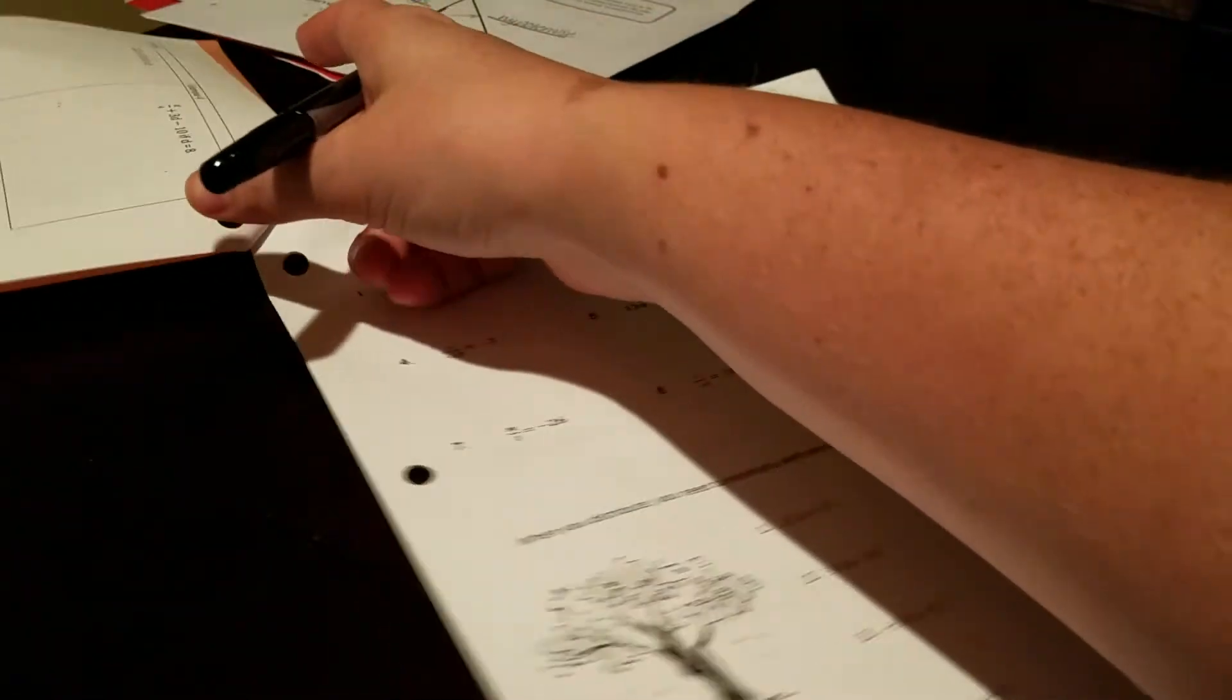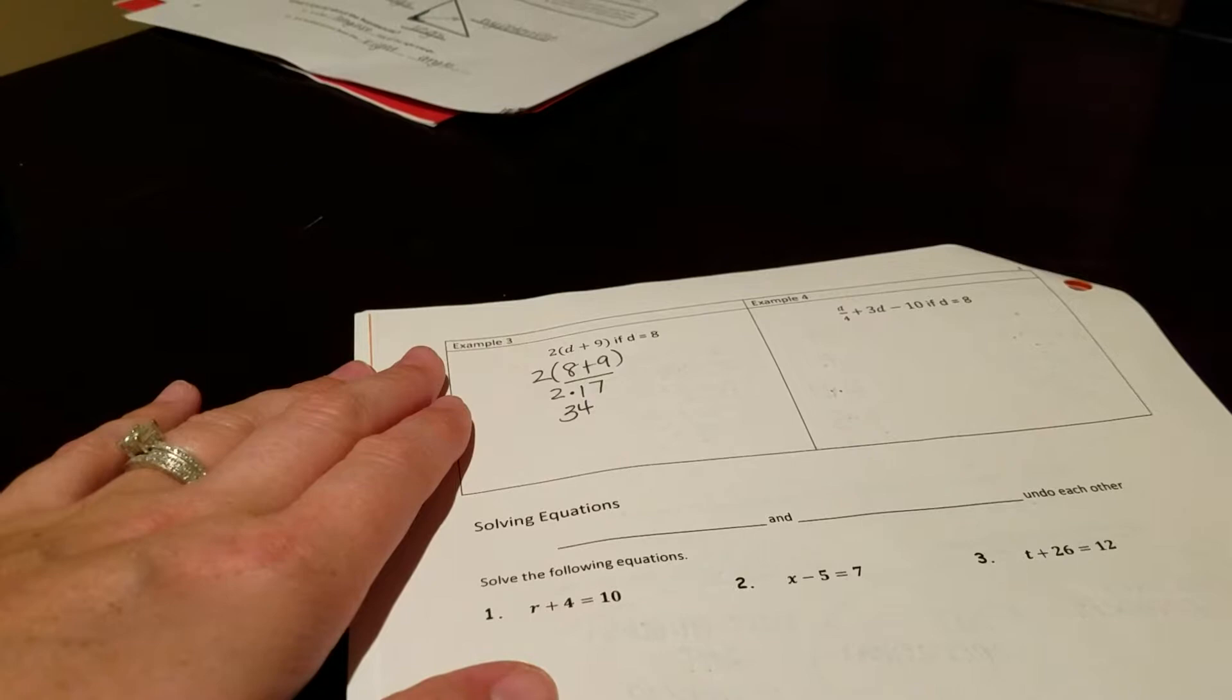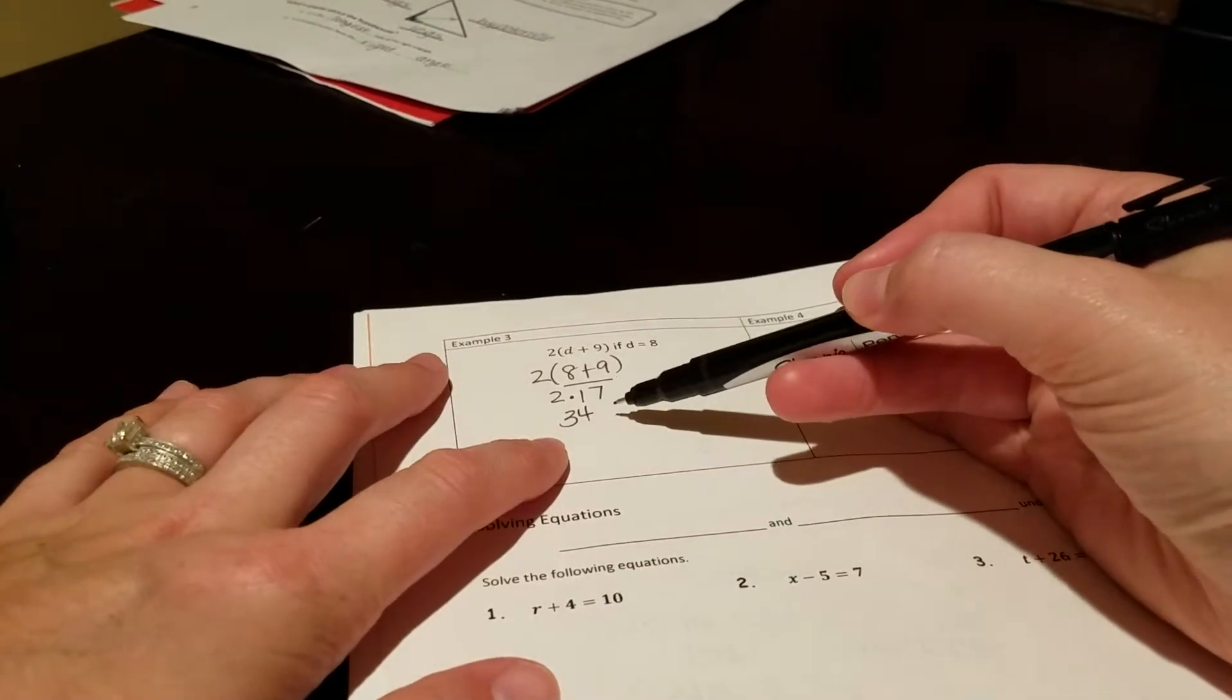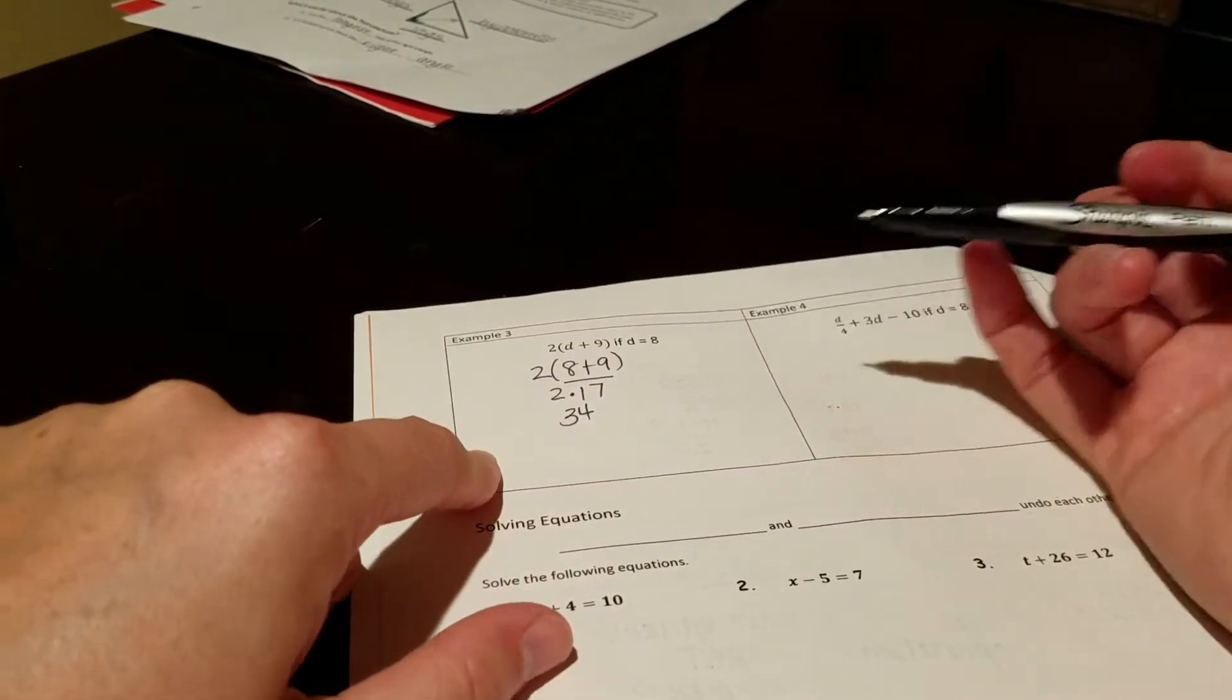Flip it over. Go ahead and take a second. Pause the video. Do example number 3 and then come back and check yourself. So in this one, you should have gotten 34 when you plugged in 8 for d.